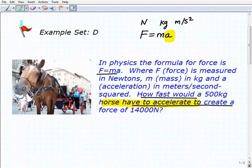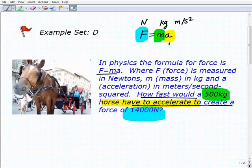Now if you notice, we're given the force. We want to create a force of 14,000 Newtons, so we're given that. We're also given that the horse weighs 500 kilograms, so we got the mass. What we're going to be looking for is acceleration. We're going to be plugging in these values and solving for a.